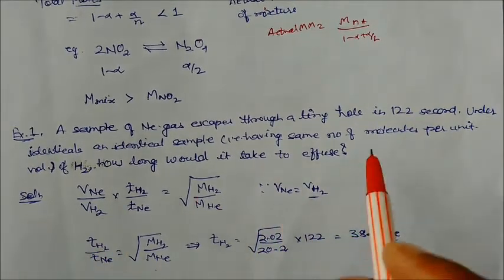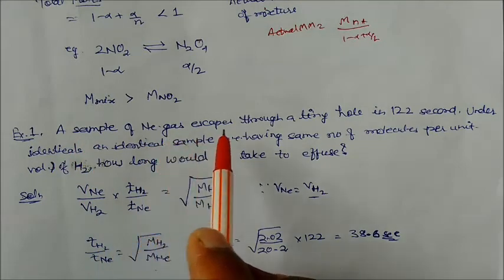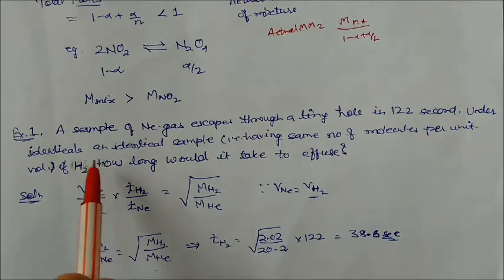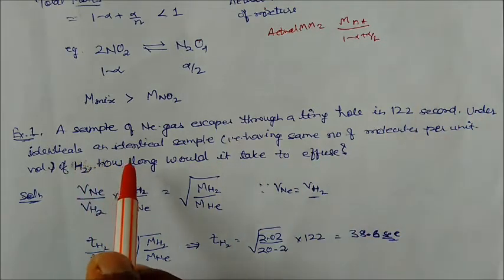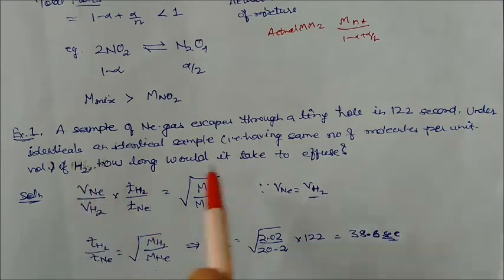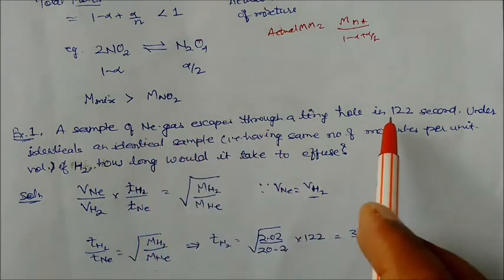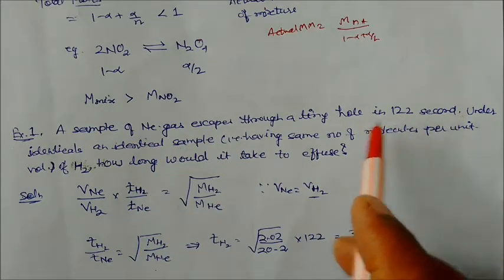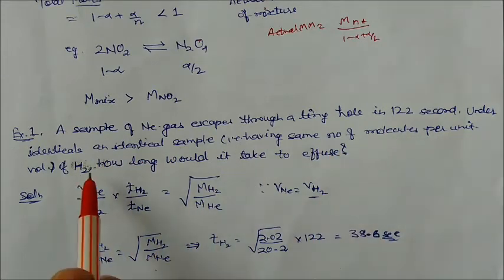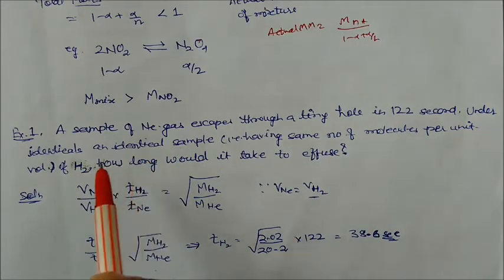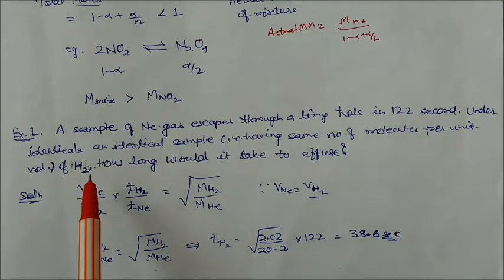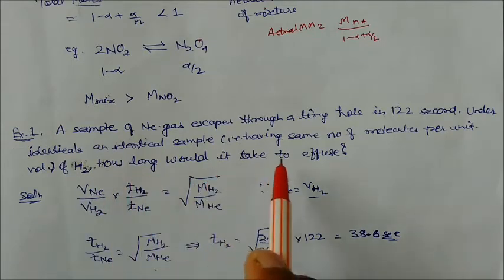Now let us solve some problems based on Graham's law of diffusion. Problem 1: A sample of neon gas escapes through a tiny hole in 122 seconds. Under identical conditions, an identical sample having the same number of molecules per unit volume of hydrogen gas is used. How long will hydrogen gas take to effuse through the same hole?